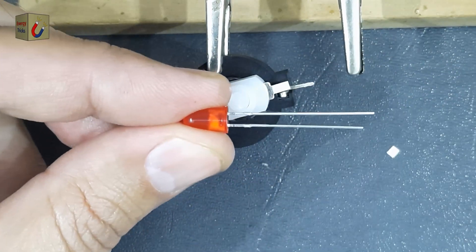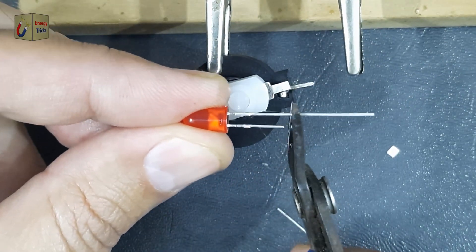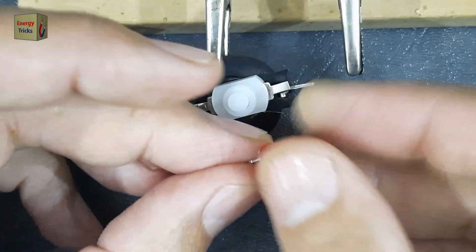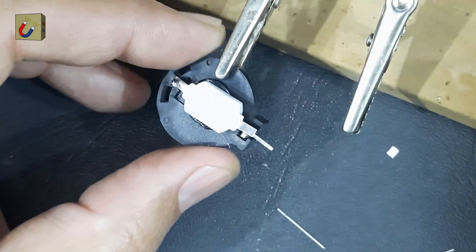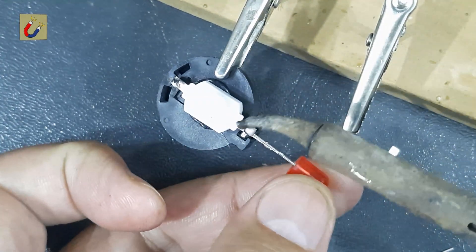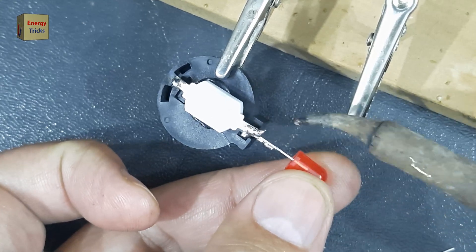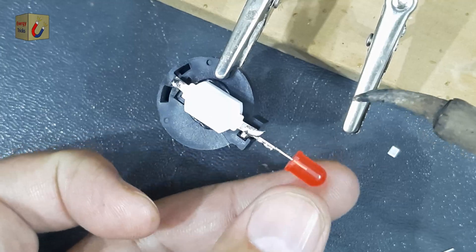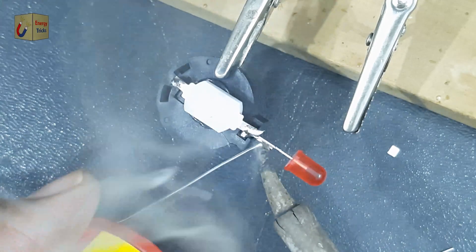At last, I will solder the LED to the switch and the battery holder. However, before doing so, I'll need to trim the LED pins slightly, as they are a bit long. Once trimmed, first I'll solder the negative pin of the LED to the switch, making sure the connection is solid and free of excess solder.